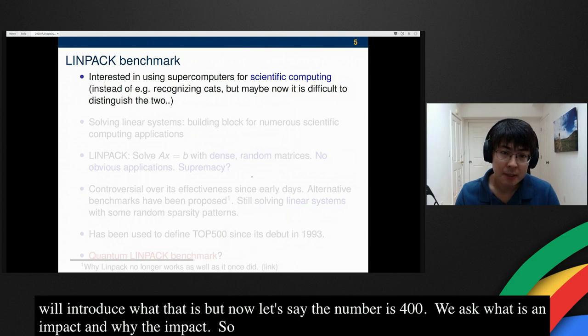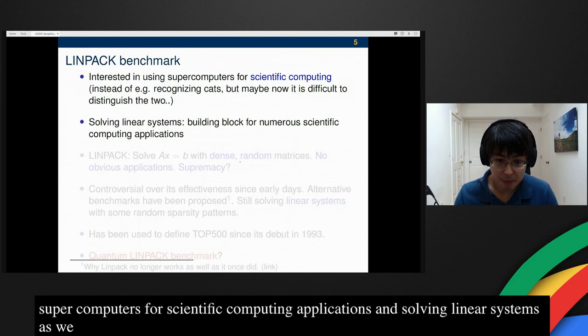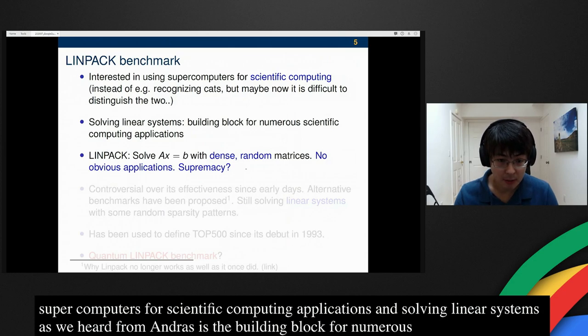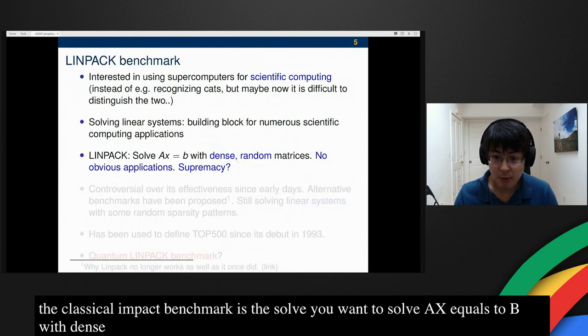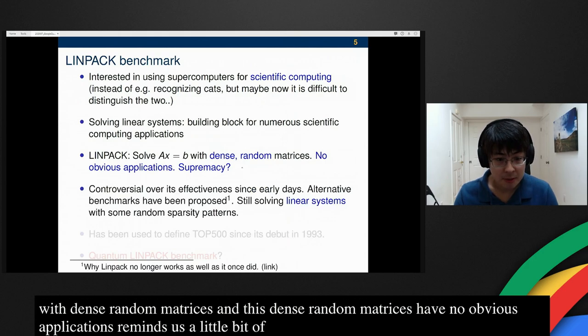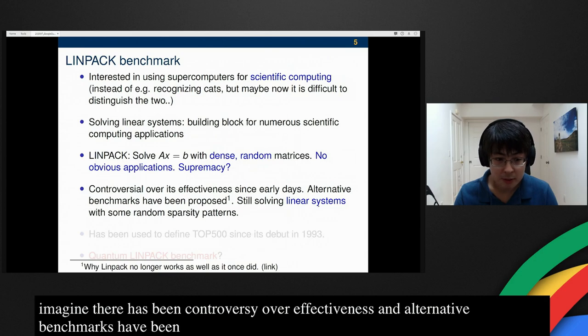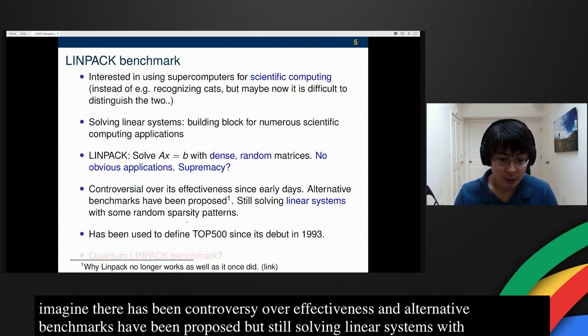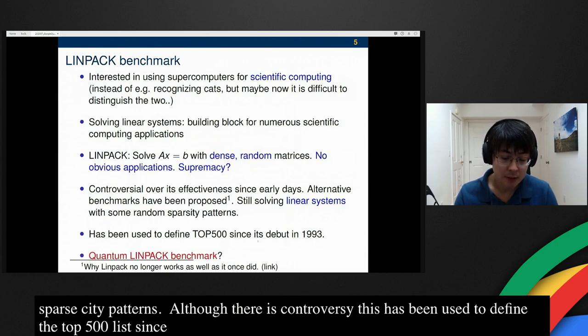The LINPACK benchmark is based on that we're interested in using supercomputers for scientific computing applications. Solving linear systems, as we just heard from Andras, is the building block for numerous scientific computing applications. The classical LINPACK benchmark is solving AX equals B with some dense random matrices. These dense random matrices have no obvious applications, reminds us a little bit about quantum supremacy. As you can possibly imagine, there has been some controversy over its effectiveness since the very early days. Alternative benchmarks have been proposed, but it's still solving some linear systems with some random sparsity patterns. Although there is controversy, this LINPACK benchmark has been used to define the top 500 list since the very beginning. This talk is about the quantum LINPACK benchmark.